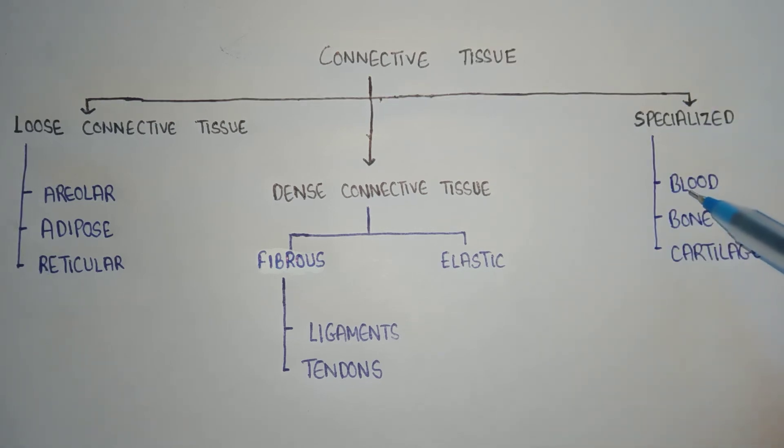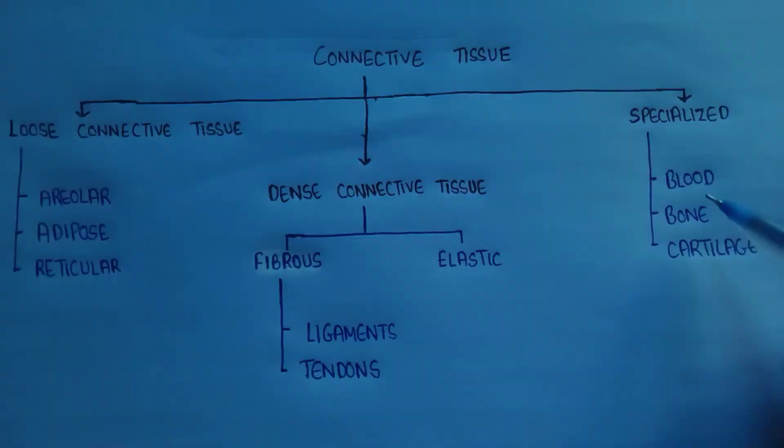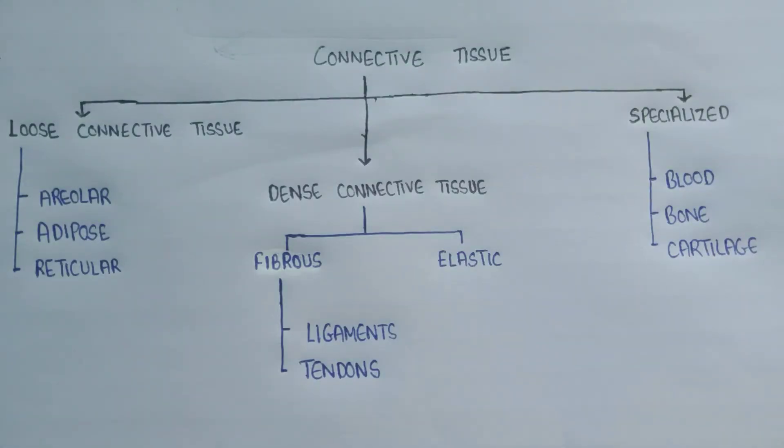The blood is a fluid connective tissue. Blood is actually not a solid, it is a fluid. It is the only fluid in this whole class of connective tissue. It consists of RBC, WBC, and platelets.